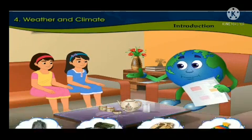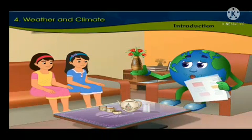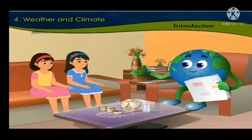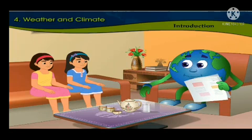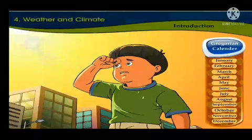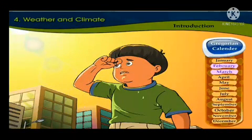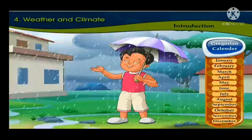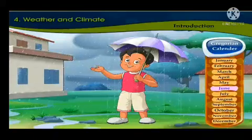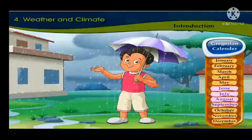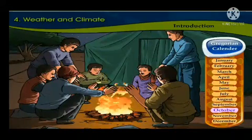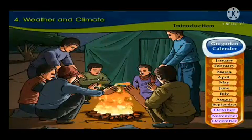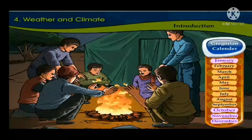Now tell me, during the year between January to December, which season falls in which months? I know the answer. There is summer season during the months of February, March, April and May. It is monsoon or rainy season in June, July, August and September. While it is winter season during the four months of October, November, December and January. Correct.